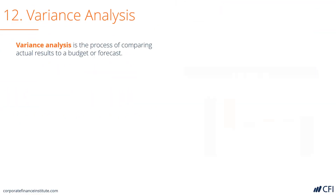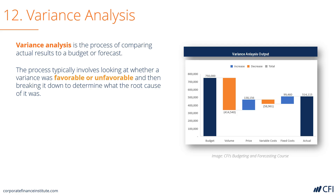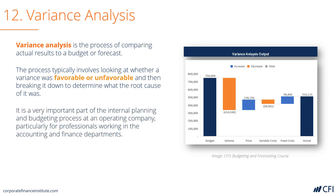Variance analysis looks to assess how a company performed relative to its budget or to a forecast. It seeks to understand using root cause analysis what was the lead or the cause of over and under performance. A waterfall chart, as shown on the right, can help summarize the impact of various assumptions in the results that the company achieved.